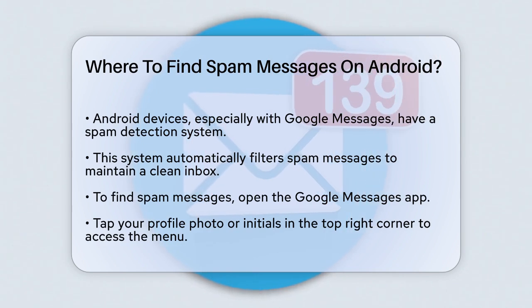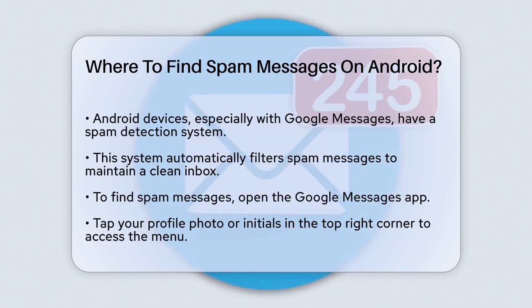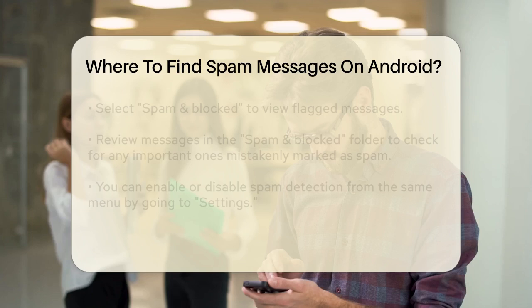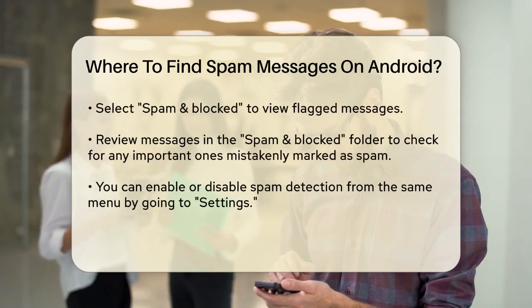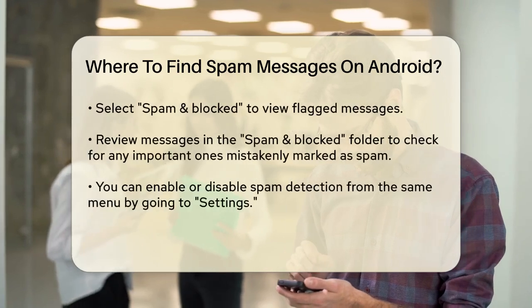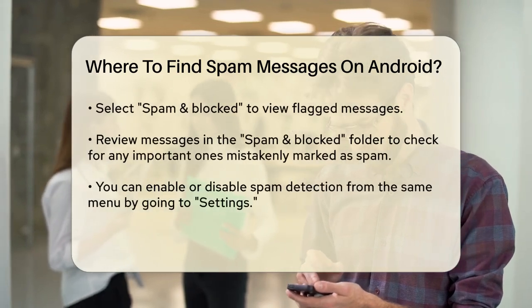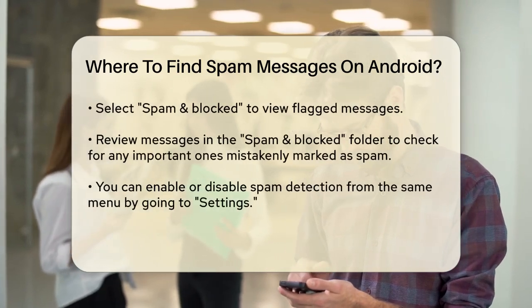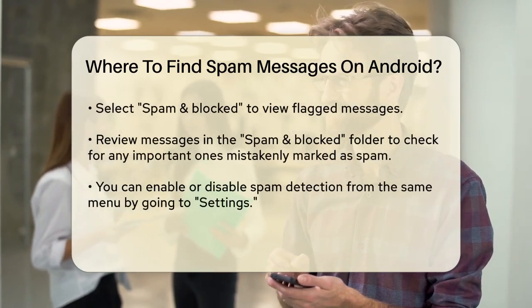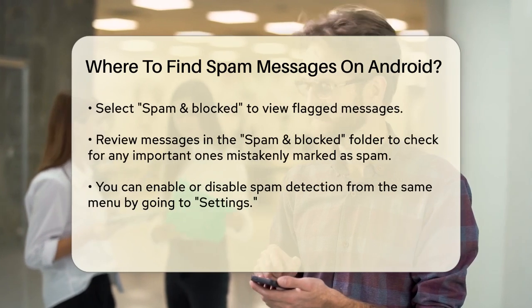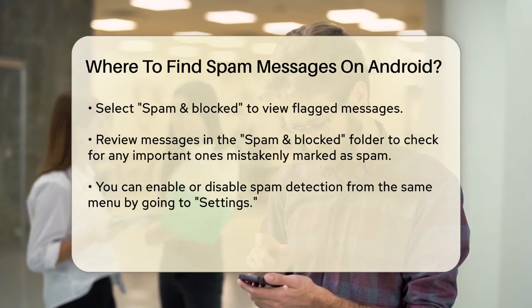To find these spam messages, you need to open the Google Messages app. Once you're in the app, tap your profile photo or initials at the top right corner. This will open a menu where you can select Spam and Blocked.